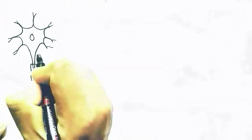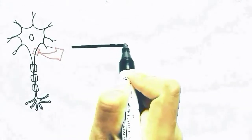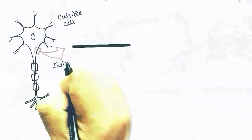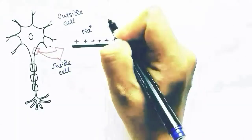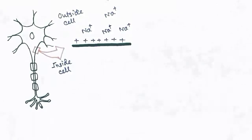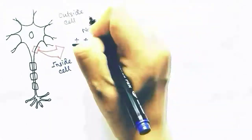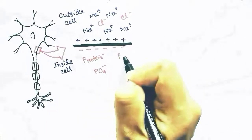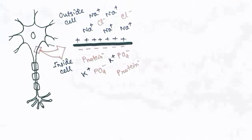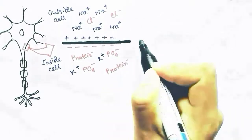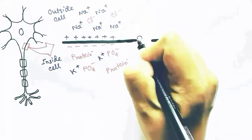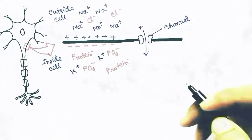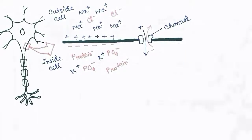Looking into the membrane of the nerve cell, that is a neuron: outside the cell there are more positively charged ions such as Na+ present, making the outside of the cell positively charged. Negatively charged ions such as PO4- and proteins make the inside of the cell negative. There are some channels present to exchange positive and negatively charged ions. This position is called the polarized state or resting membrane potential.